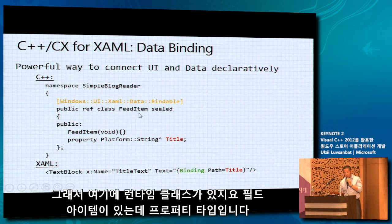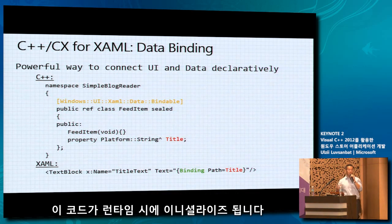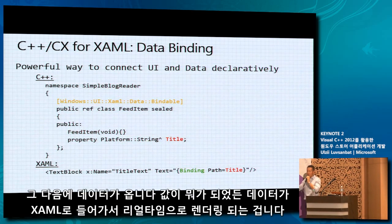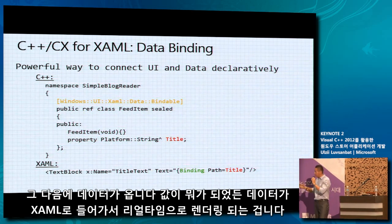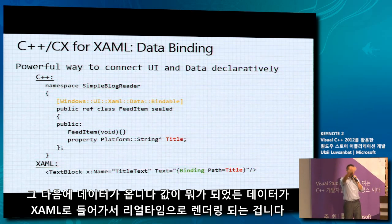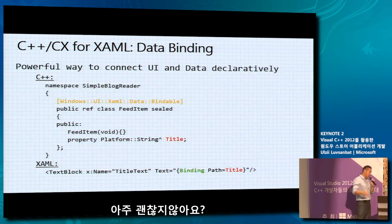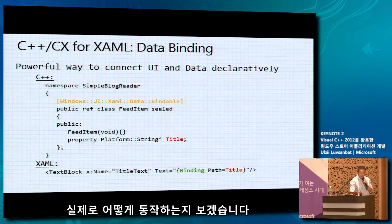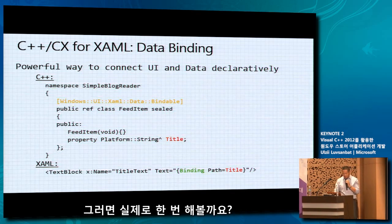I have a runtime class called FeedItem with a property called title. That title will be initialized when the code is executing at runtime, and then whatever the data value is will be fed into my XAML, which will then be rendered real-time in my application. That's pretty cool. Let's do an example — let's get started.